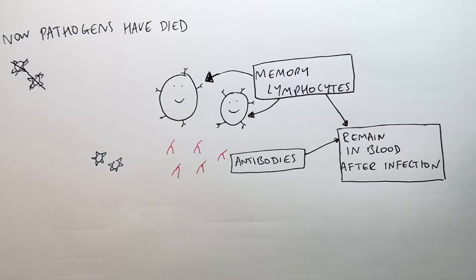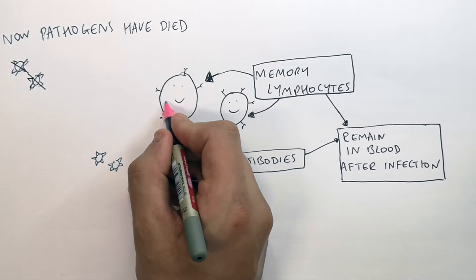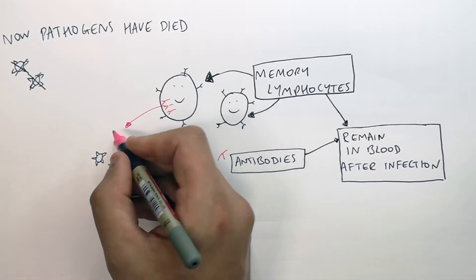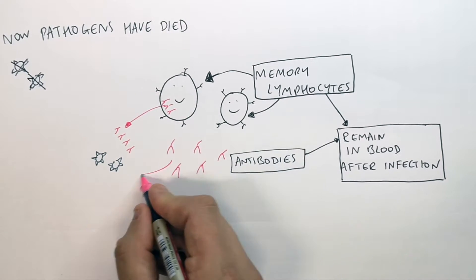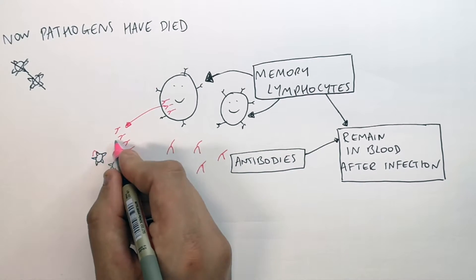So what happens is if you've got a secondary infection of the same pathogen, your memory lymphocytes will react much more quickly now. So the memory lymphocytes will very quickly produce antibodies. They produce antibodies and the antibodies that are in the blood will bind the pathogens.